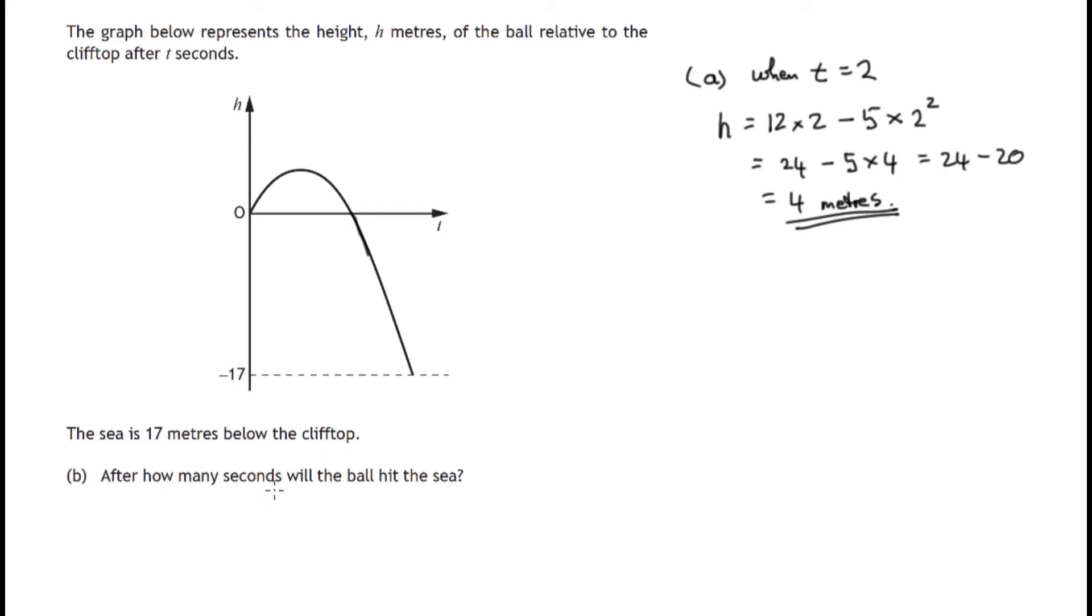At a height of negative 17 meters, that's 17 meters below the top of the cliff, and it's asking how many seconds. In other words, we're trying to find t. In this case, in part (a) we were given a value of t and we had to find h. We're doing the opposite. We're given h, which would be negative 17, and we're asked to find t.